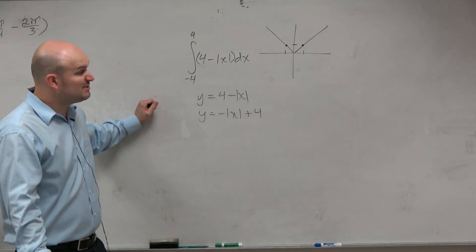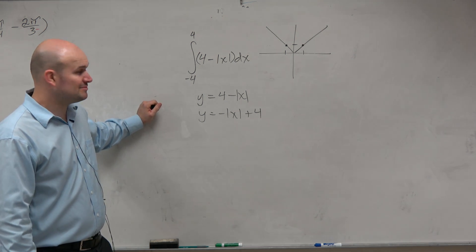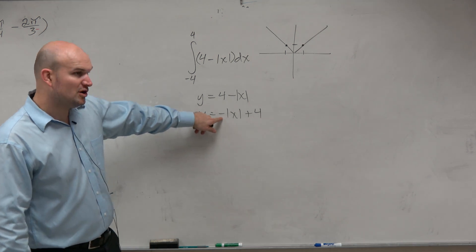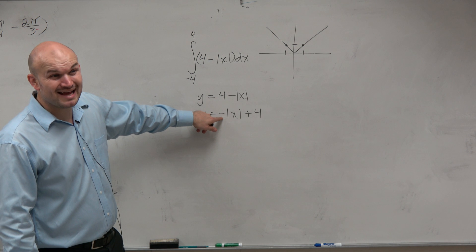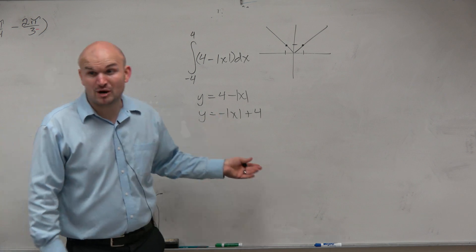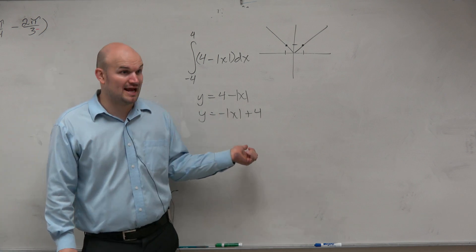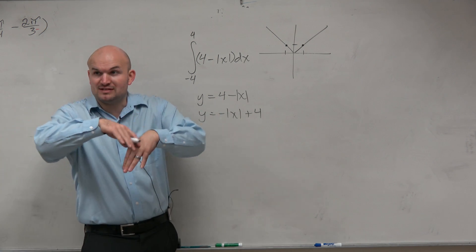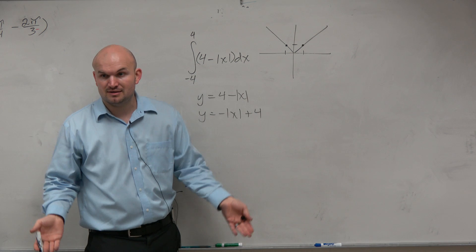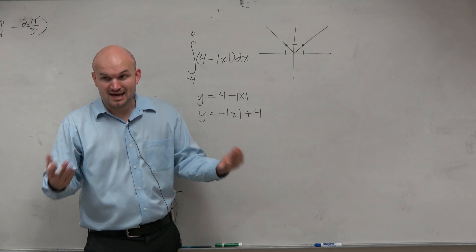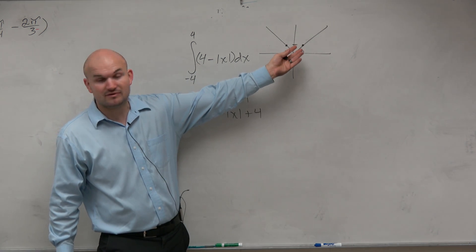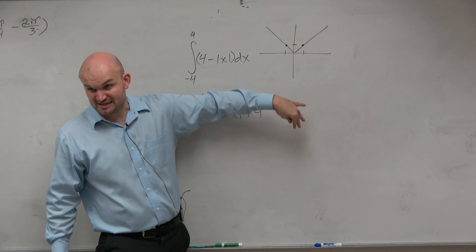So now we just need to understand the transformations. If we're multiplying by negative — remember from quadratics, Algebra 1, Algebra 2 — that negative means you're reflecting about the x-axis. So now this v-graph is now facing down.